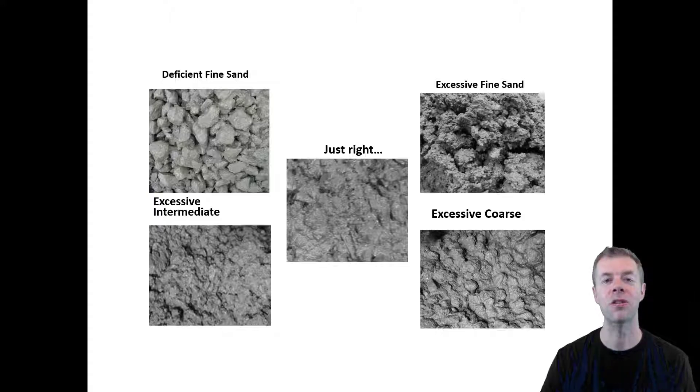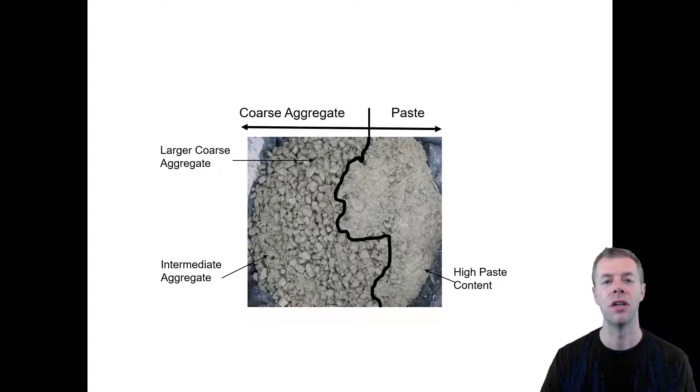Another example why this is important. And even in really bad scenarios, you can get situations where you get extreme segregation. Here we're showing all the coarse aggregate going to one direction, all the paste going to another direction. This isn't good. This isn't placeable concrete. This isn't constructable concrete. We need to redesign our concrete when things like this happen. We need to understand why does this happen.